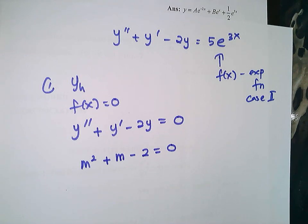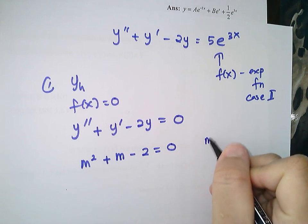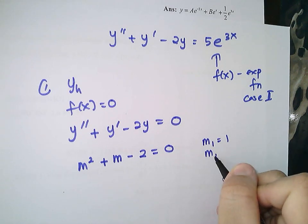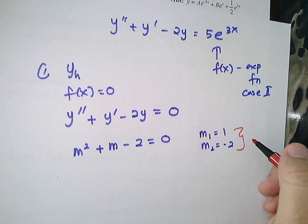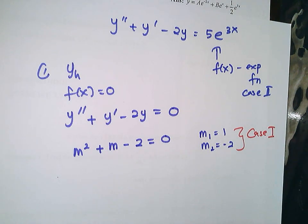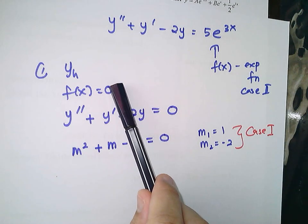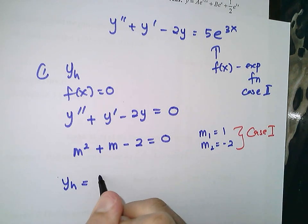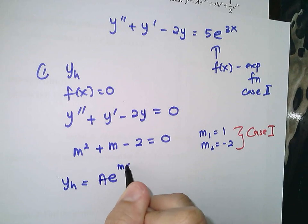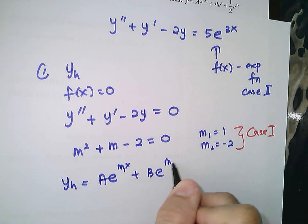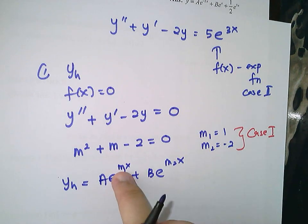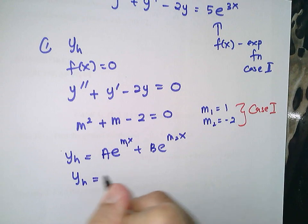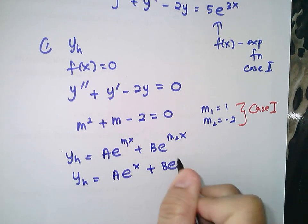Get the value of m using a calculator — you should get m equals 1 and negative 2. So m₁ = 1 and m₂ = −2. You have two different values of m, so this is Case 1 for the homogeneous solution. Write the general solution: yh = ae^(m₁x) + be^(m₂x). Substituting gives yh = ae^x + be^(−2x).